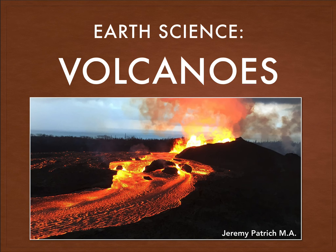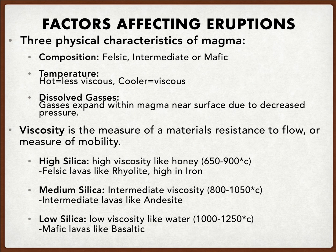So let's first introduce some of the factors that really help us understand some of these eruptions. When referencing the differences between magma and lava, magma is deep underneath the surface and lava is what we see on top. Some of the factors that affect eruptions — there are three physical characteristics of magma that we look at: the first being composition, next being temperature, and the last being the dissolved gases that are within that material.